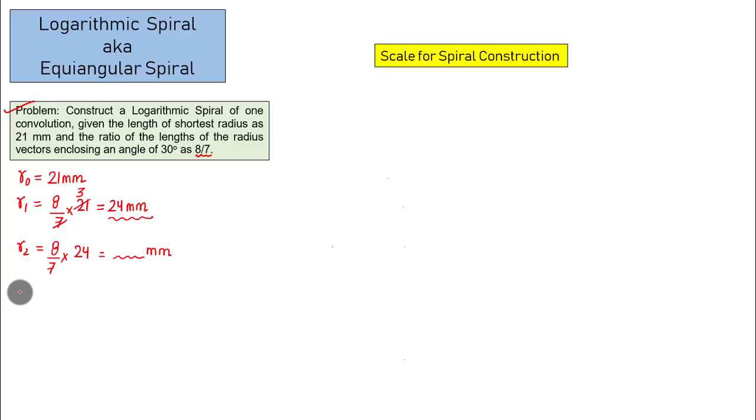So what do we do? We construct a scale and from that scale we will transfer all the distances with the help of a compass from the scale of the spiral to the curve of the spiral. You will understand that very soon. So let's kick off. Here we go.